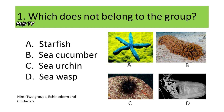These organisms could be grouped into either Echinoderm or Cnidarian. If you chose D, Sea Wasp, you are correct. Starfishes, sea cucumbers, and sea urchins belong to Phylum Echinodermata, while the Sea Wasp belongs to Phylum Cnidaria.